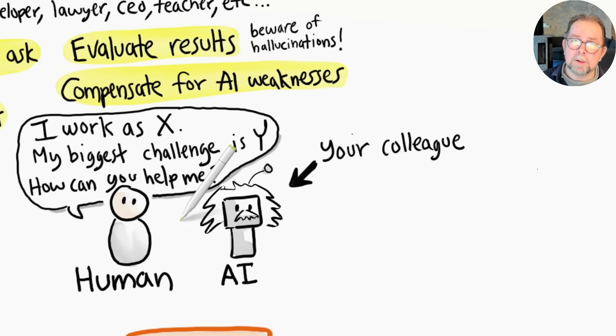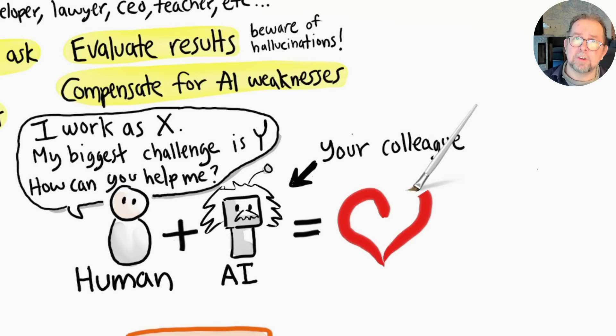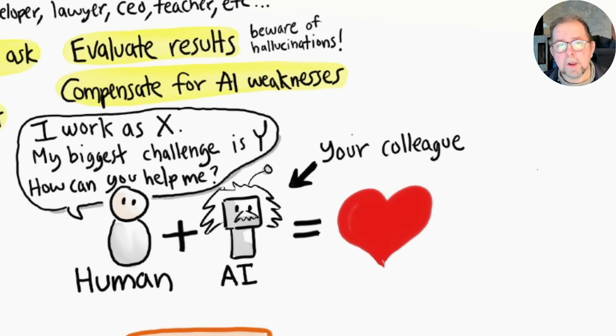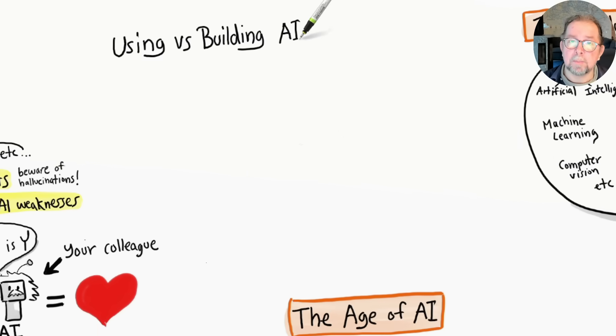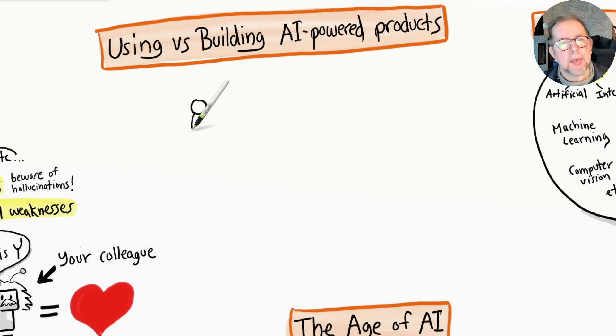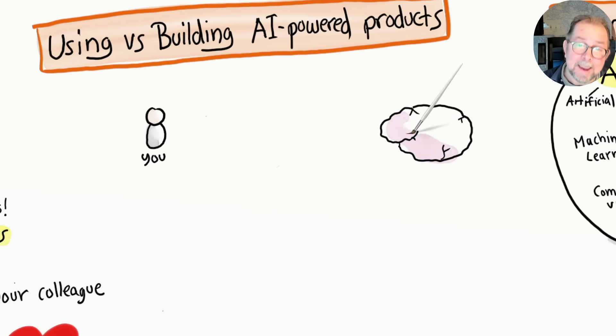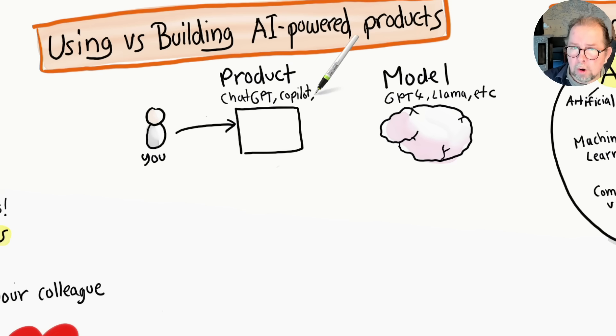It's important to distinguish between the models and the products that build on top of them. As a user, you don't normally interact with the model directly. Instead, you interact with a product—a website or a mobile app—which in turn talks to the model behind the scenes. Products provide a user interface and add capabilities and data that aren't part of the model itself. For example, the ChatGPT product keeps track of your message history, while the GPT-4 model itself doesn't have any message history.